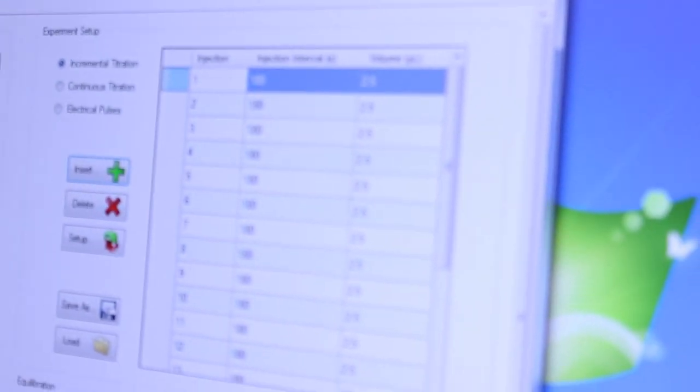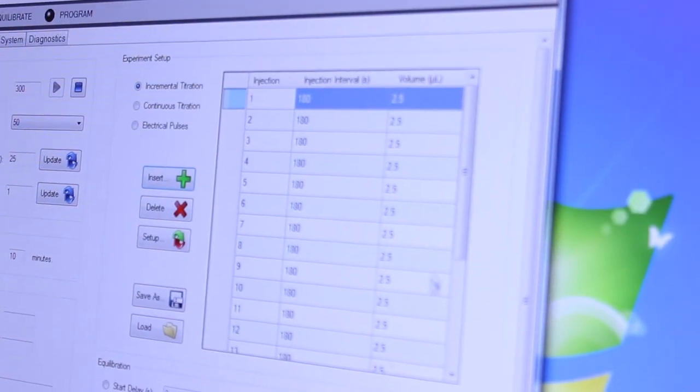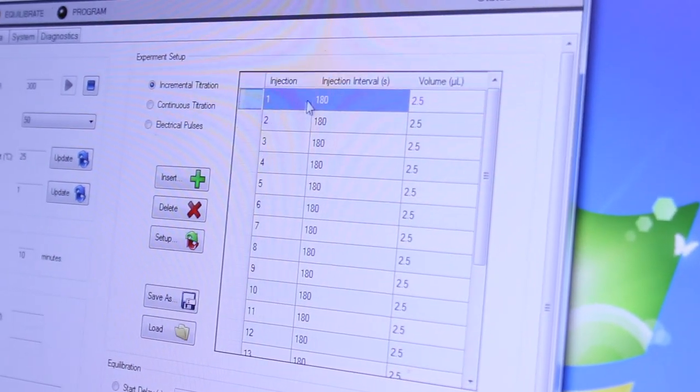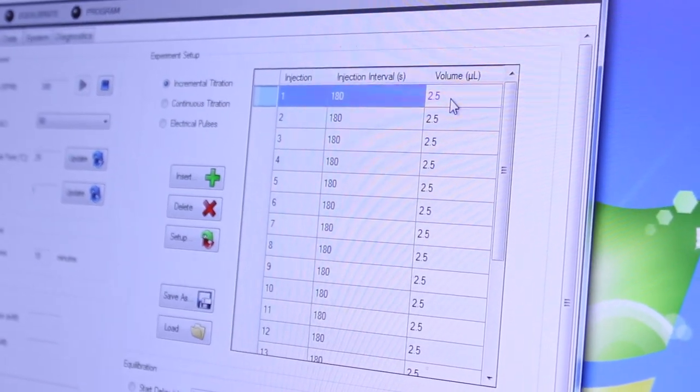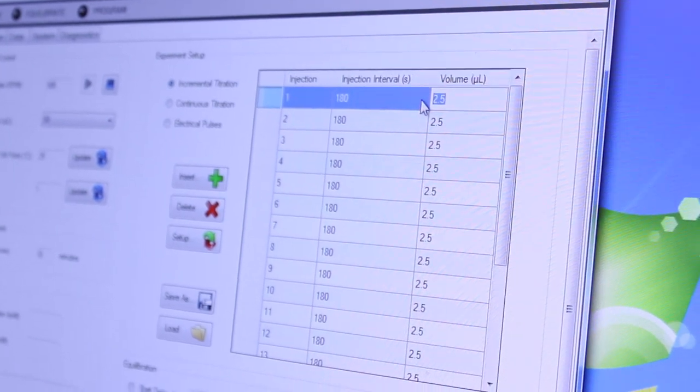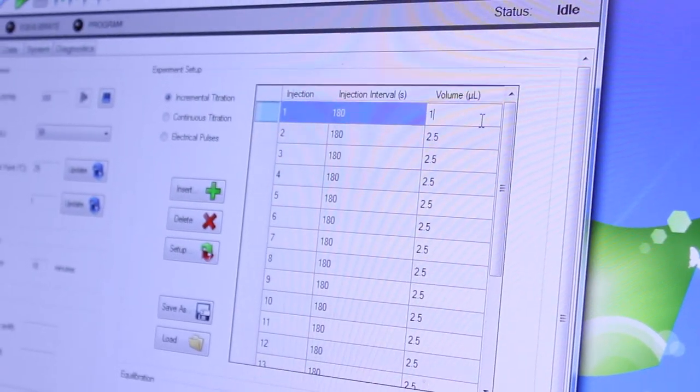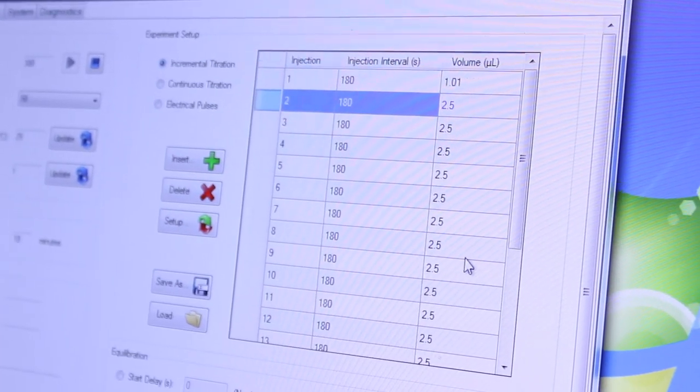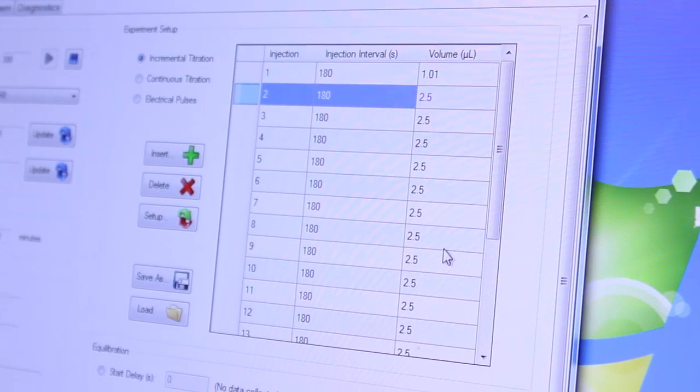That will fill out the table. In many cases the first injection will have a large error so it can be a good idea to reduce the volume of the first injection. Talking to the applications hotline can help provide advice with this if you don't know.